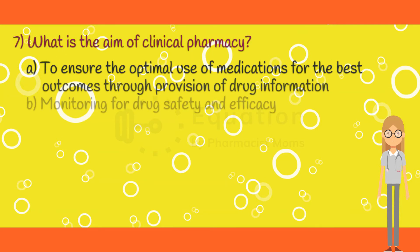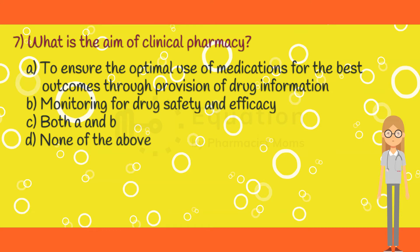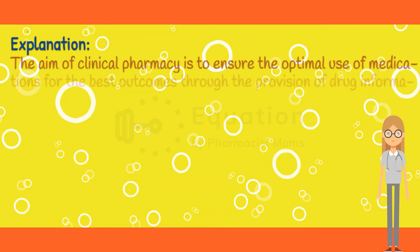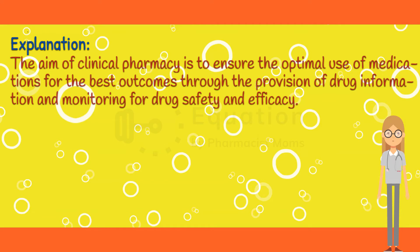Question 7. What is the aim of clinical pharmacy? Option A: To ensure the optimal use of medications for the best outcomes through provision of drug information. Option B: Monitoring for drug safety and efficacy. Option C: Both options A and B. Option D: None of the above options. The correct answer is option C. The aim of clinical pharmacy is to ensure the optimal use of medications for the best outcomes through the provision of drug information and monitoring for drug safety and efficacy.